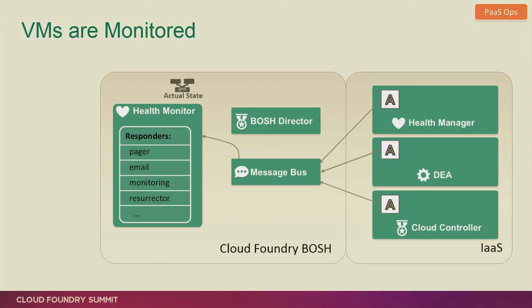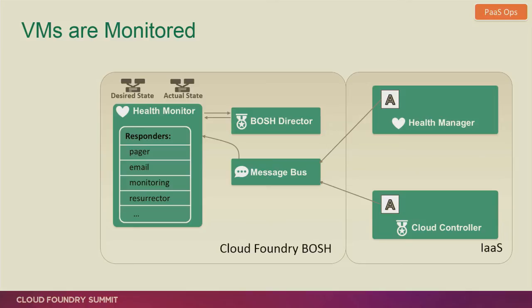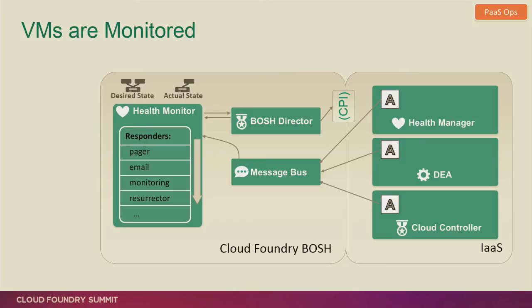What happens if the agent itself goes down? In a familiar pattern, the agents are all sending out heartbeat messages as well. They get picked up by the health monitor in BOSH, which checks them against the desired state retrieved from the BOSH director. If something happens and one of those agents or machines goes down, we'll be missing that heartbeat message. The actual state is updated and an alert is processed — pages, emails — and a special responder called the Resurrector uses the BOSH director through the CPI to spin up a new VM and start that process. That's number four.